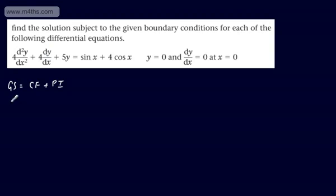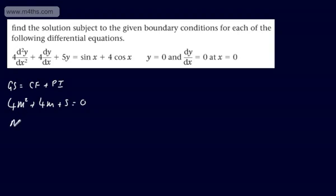We can use the auxiliary equation for this. The auxiliary equation will be 4m² + 4m + 5 = 0. That's not going to factor, so we'll use completing the square, dividing through by 4: m² + m + 5/4 = 0.